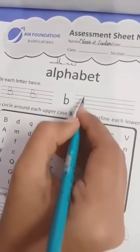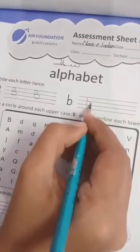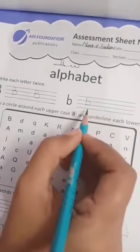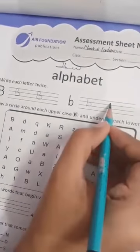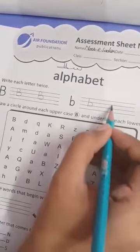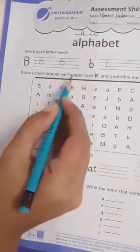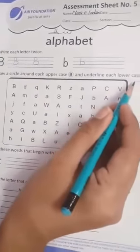First, we make one in upper three lines and then make another one. It's a sound book. Write once again here. And after this, draw a circle around each uppercase and underline each lowercase.